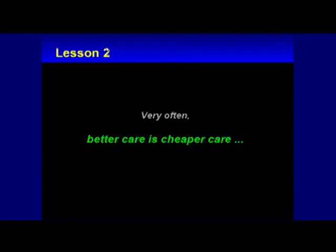Lesson number two: it turns out that better care is very often cheaper care. I've got more than 100 of these examples. In Intermountain, I can document more than $300 million per year in variable cost savings that arose because we improved our clinical results. When I talked about Dr. Morris' shared baseline protocols, that has been the key. The reason I wanted to show you the pathology results is because it applies across the house of medicine so far as we can tell — not just in direct patient care, but also radiology when you're choosing and evaluating exams.